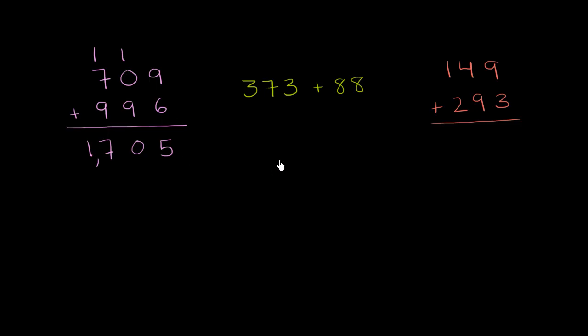We want to write the ones place under the ones place and the tens place under the tens place so that we're adding the appropriate place values. So 3 plus 8 is 11. One in the ones place, one in the tens place.